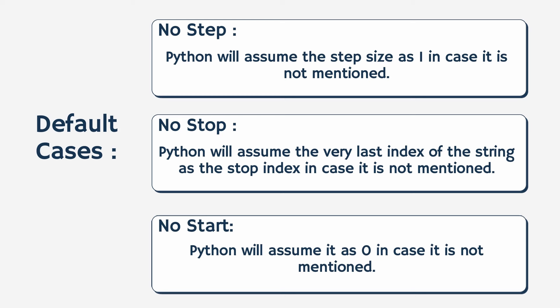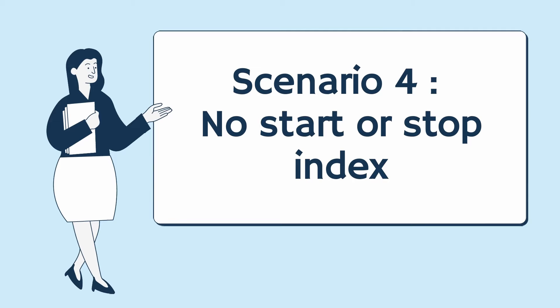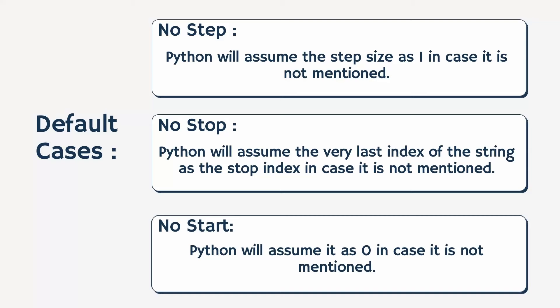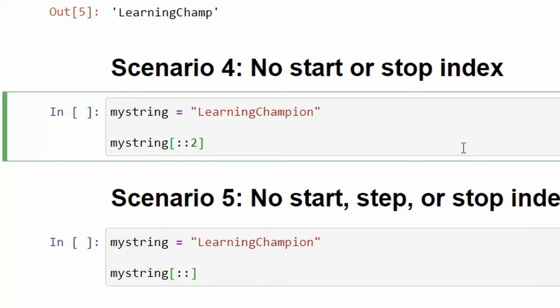Scenario 4: no start or stop index. The next scenario is where we don't specify the start or the stop index but give the step size as 2. In such a scenario, as discussed previously, Python will assume the starting index as 0 and the stop index as the end of the string, but since we have given the step size as 2, it will return every alternate character after skipping the characters in between.